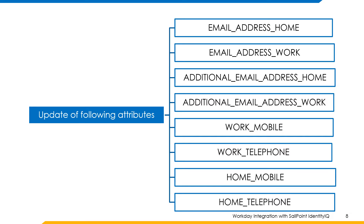As we discussed about updating attributes in the previous slide, all these attributes shown here — email address home, email address work, additional email address home, additional email address work, work mobile, work telephone, home mobile, home telephone — are the attributes that can be updated in Workday. For write back to happen, there will be put permissions that need to be granted for those particular attributes.